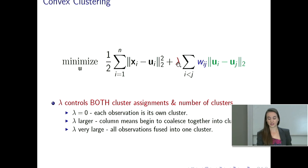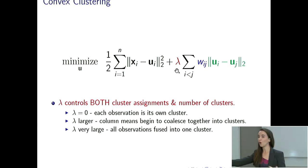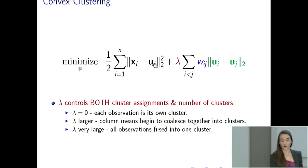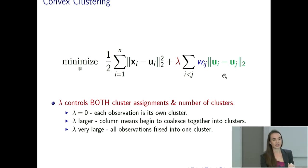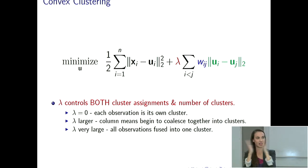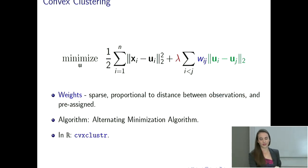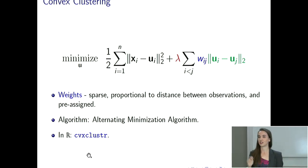There's only one tuning parameter in this whole problem — lambda. It controls both the cluster assignments and the number of clusters. Starting with lambda equals zero, each centroid is its own cluster. As lambda gets bigger, those u's are pushed together. This penalty says push u_i and u_j together and fuse them. When lambda is very large, they all fuse together. The weights can be pre-assigned, there are iterative optimization routines for this, and you can explore these in R with CVX Cluster R.